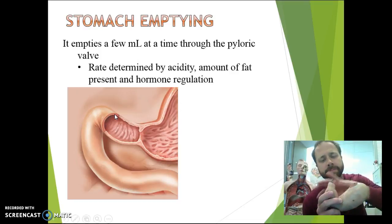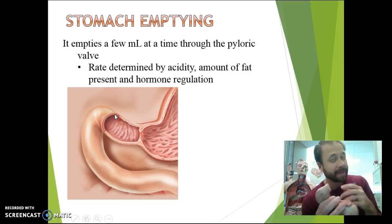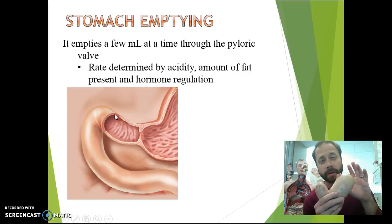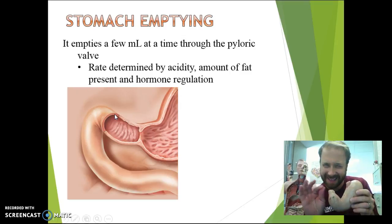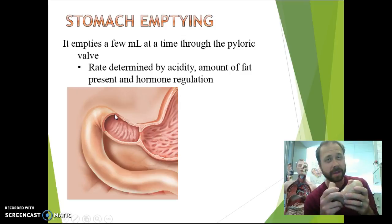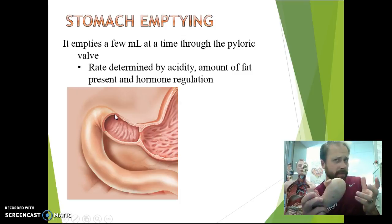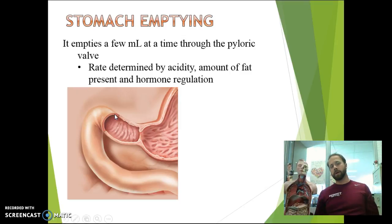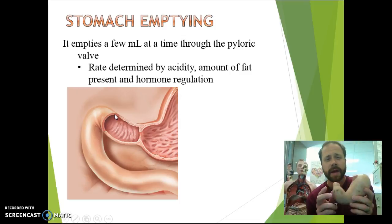Now when everything is ready to start moving out of the stomach as it empties, you can only have a few milliliters at a time through that pyloric valve. That rate is determined by the acidity, the amount of fat present, and hormone regulation. Remember, only the stomach is an organ made to withstand that high acidity — that very low pH — so it can only let a little bit out at a time. If it lets too much through, the small intestines would have the same problem as ulcers in the stomach, with acid burning away the cells. Fat also slows down the release, which is why high-fat meals make you feel full and sluggish longer. Hormones also help regulate the release of food.